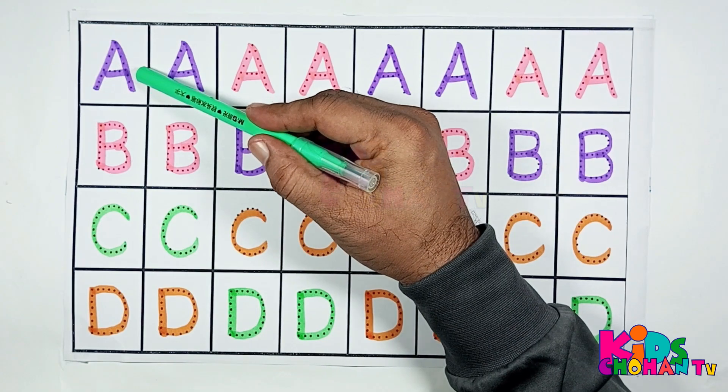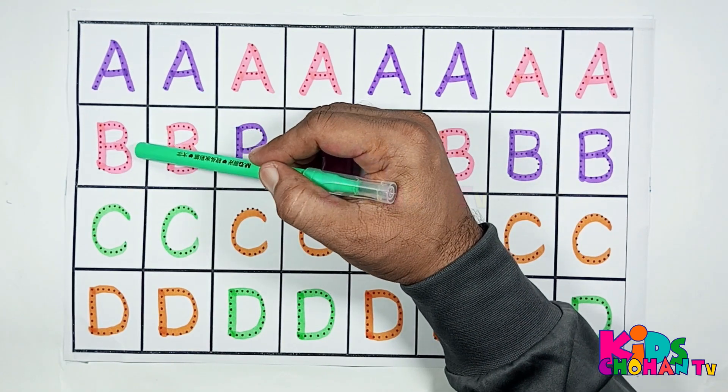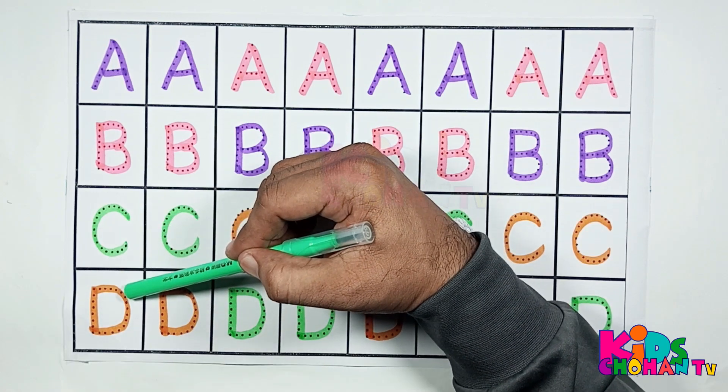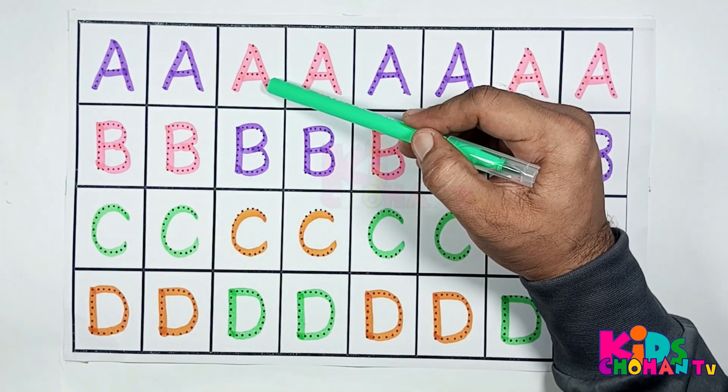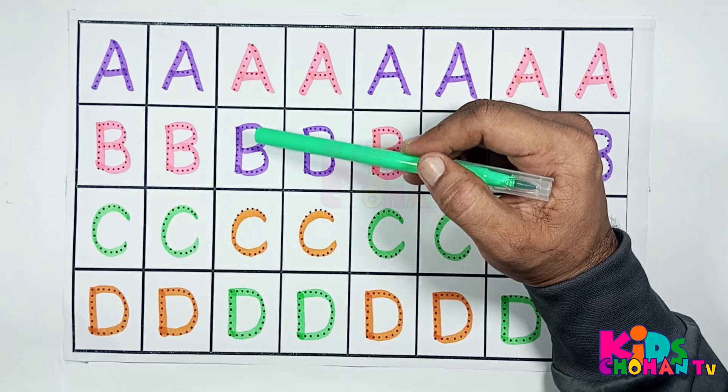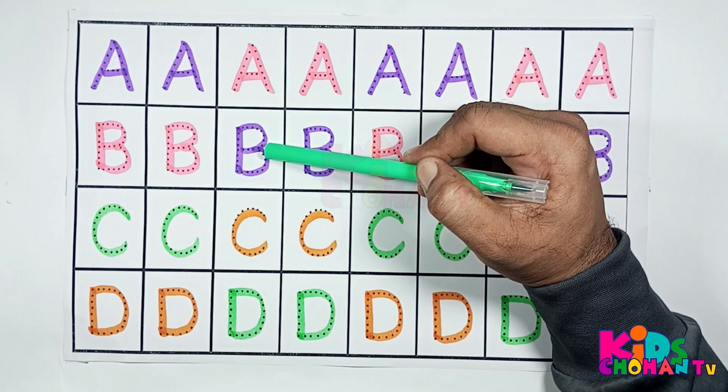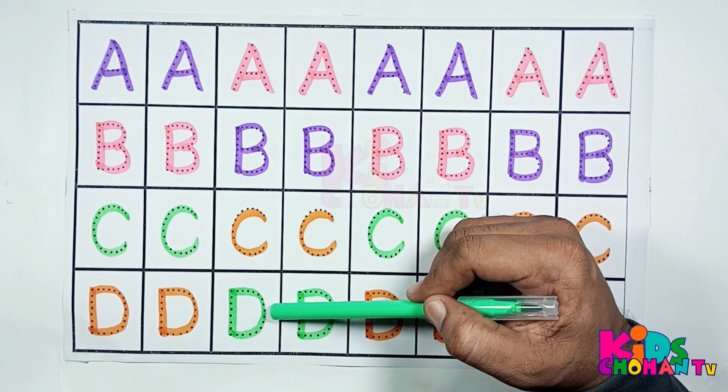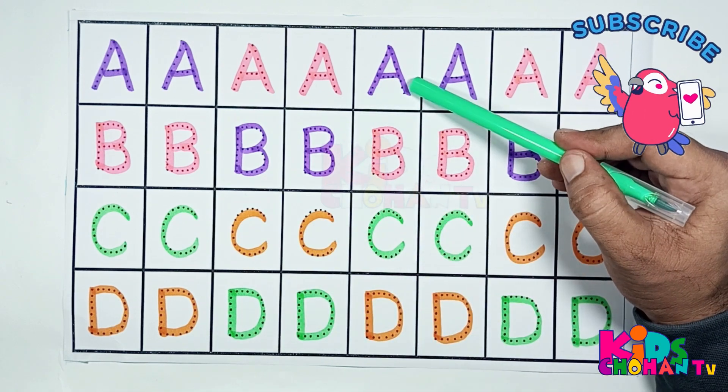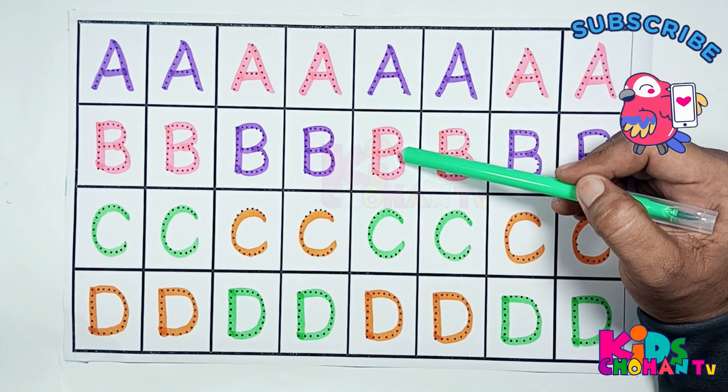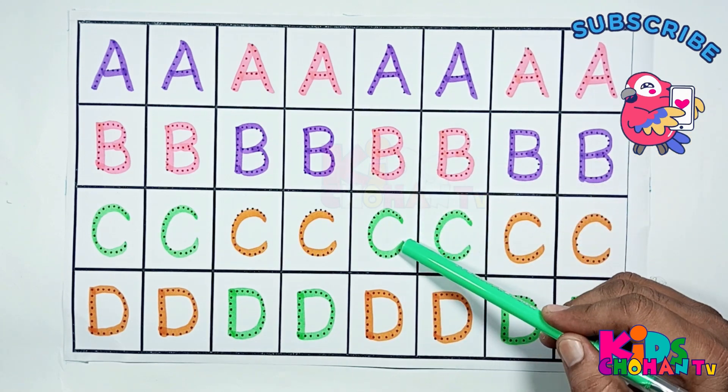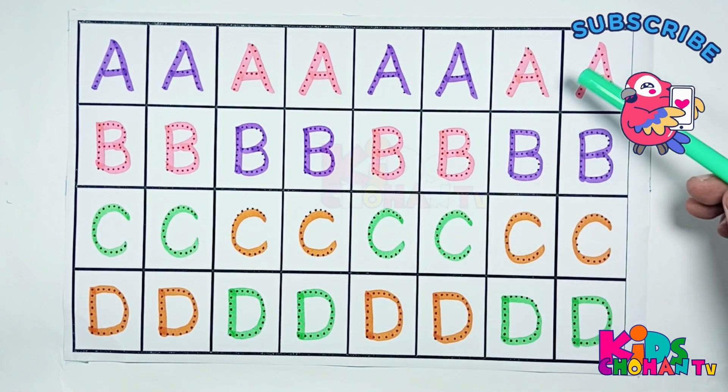Let's read again! A for Apple, B for Ball, C for Cat, D for Dog. A for Alligator, B for Bat, C for Cycle, D for Duck. A for Ant, B for Ball, C for Car, D for Dog.